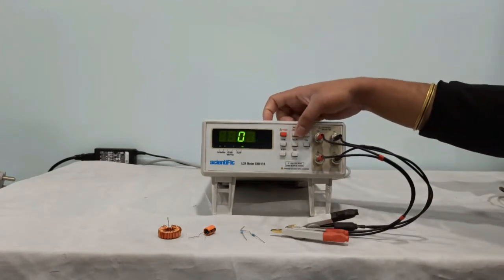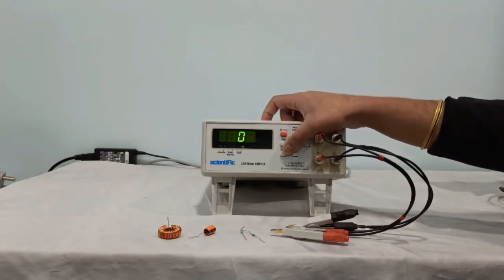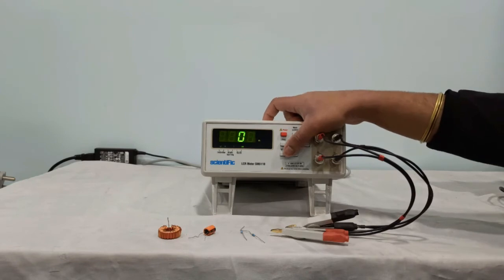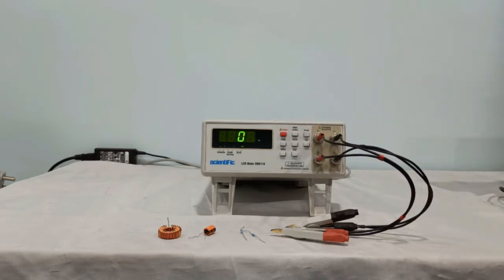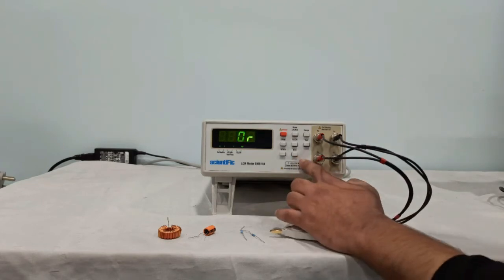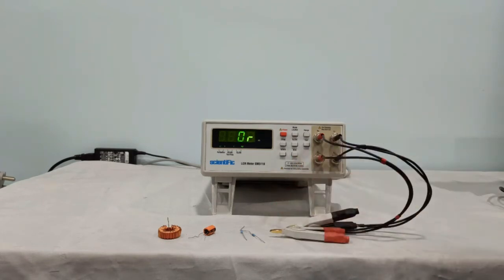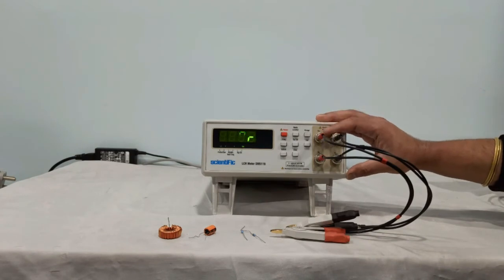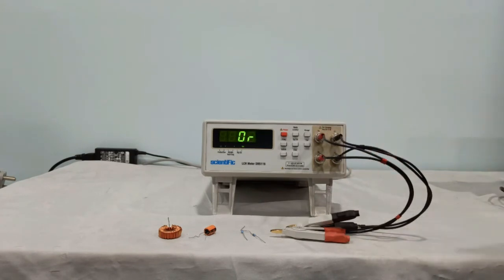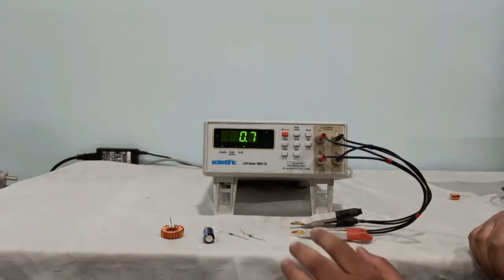Next we have Q, D and phase. Q is for quality factor, D is for dissipation factor and theta is for phase angle. Next we have bias. This is for providing 2V polarizing voltage for use when measuring electrolytic capacitors. Now we have a few components with us. We will see measurements on this unit.